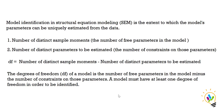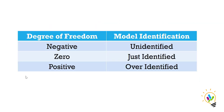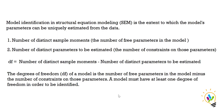A model must have at least one degree of freedom in order to be identified. Based on the degree of freedom, model identification has three types: if degree of freedom is negative, it is called an unidentified model; if degree of freedom is zero, it is called a just identified model; and if degree of freedom is positive, it is called an over identified model.